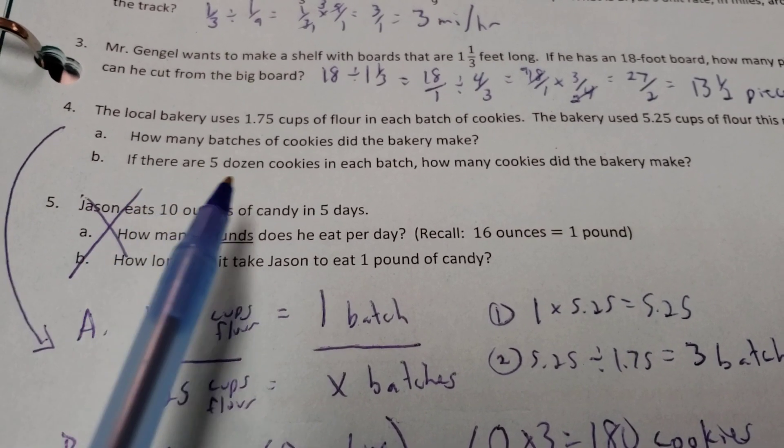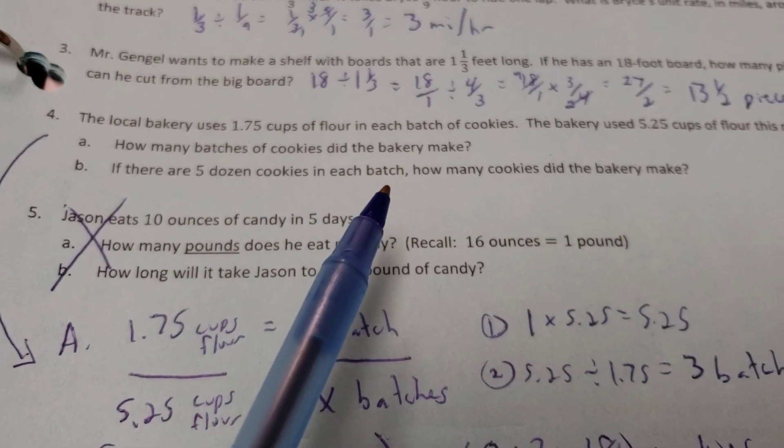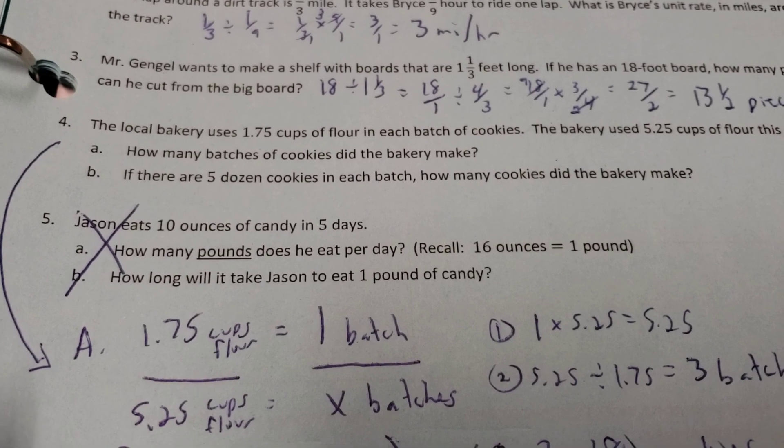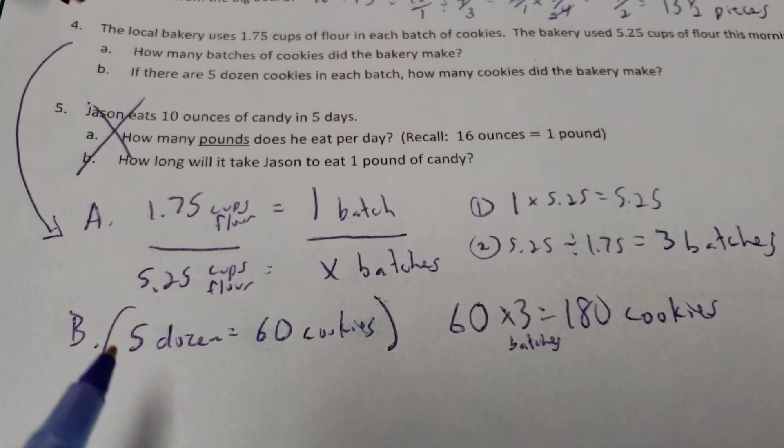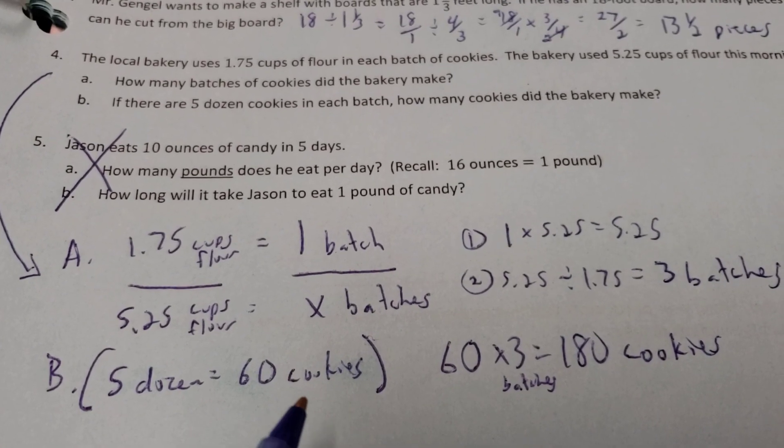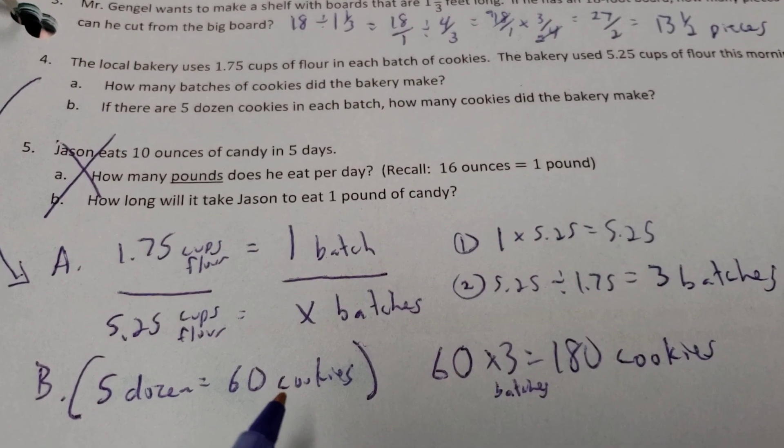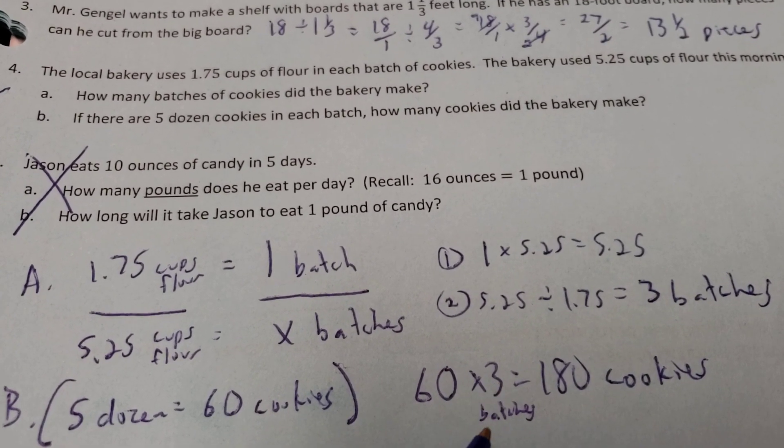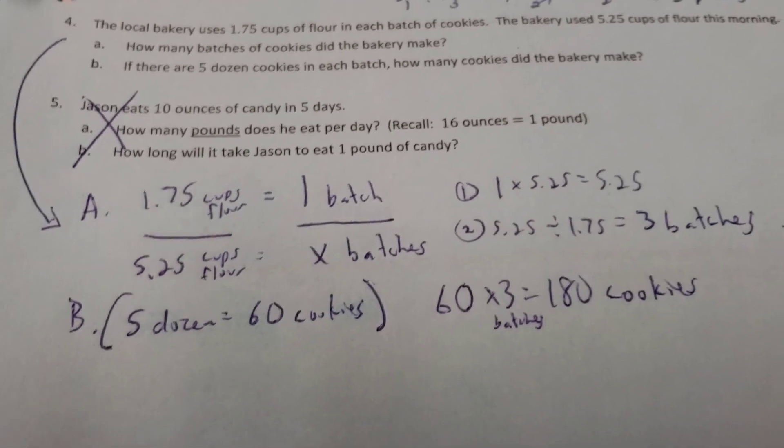Now, on B, it says if there's 5 dozen cookies in each batch, how many cookies did the bakery make? Well, 5 dozen, we talked earlier about a dozen means 12. So, you've got to remember, 5 dozen, 5 times 12, gives you 60 cookies. And, if you know you're going to have 3 batches of cookies, 60 times 3 batches gives you 180 cookies total.